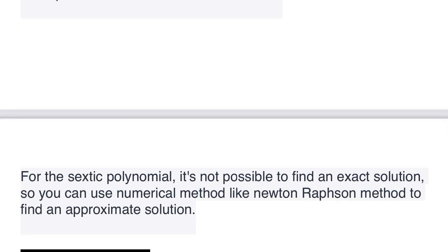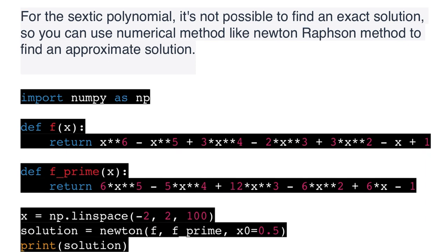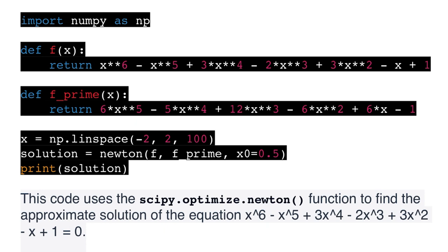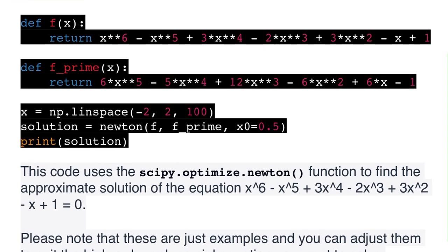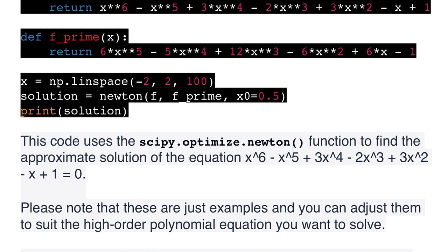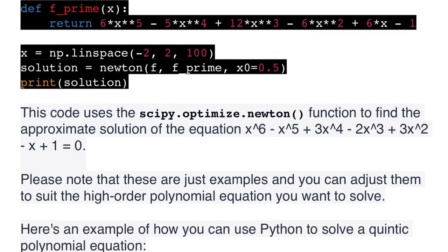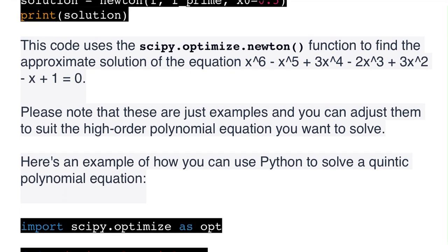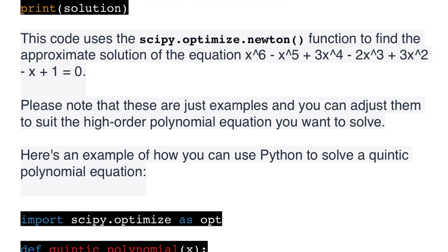For a sextic polynomial, it's not possible to find an exact solution, so you can use numerical methods like the Newton-Raphson method to find an approximate solution. For example: import numpy as np; define the polynomial function f(x) and its derivative f'(x); use scipy.optimize.newton(f, f_prime, x0) with an initial guess to find the solution; then print the solution.